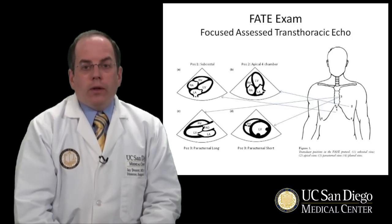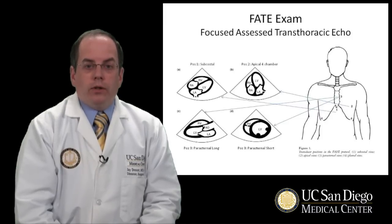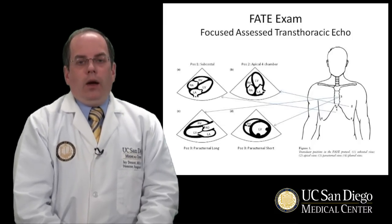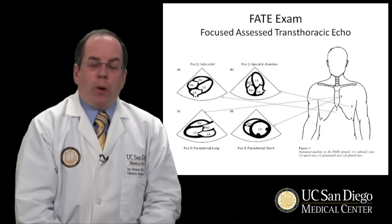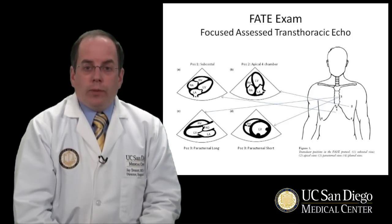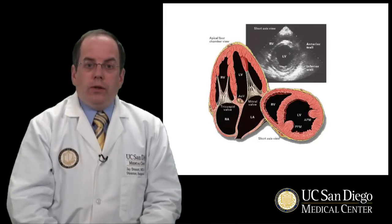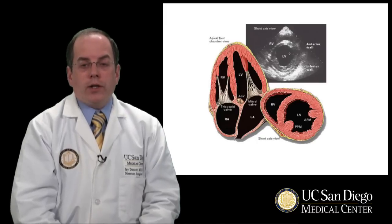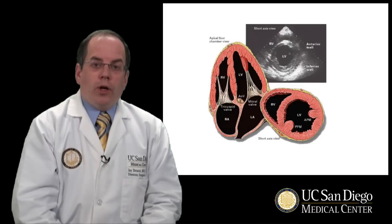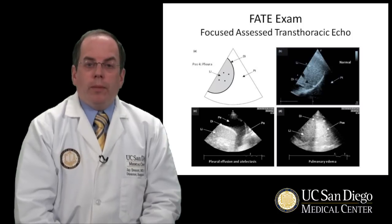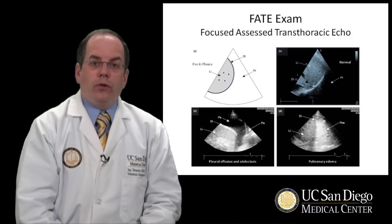The FATE exam is usually done using four windows: the subcostal area just below the xiphosternum, which is part of the existing FAST exam; an apical view, particularly if the patient is able to roll onto their left side; and parasternal views used to see the heart in both the parasternal long and parasternal short axes. The heart on ultrasound shows up quite well, and particularly the left ventricle when looked at in the short axis view is viewed as a circular object, with its contractility throughout the ventricle readily identified. It's also possible to pick up the presence of pleural fluid or pneumothorax in association with this examination.